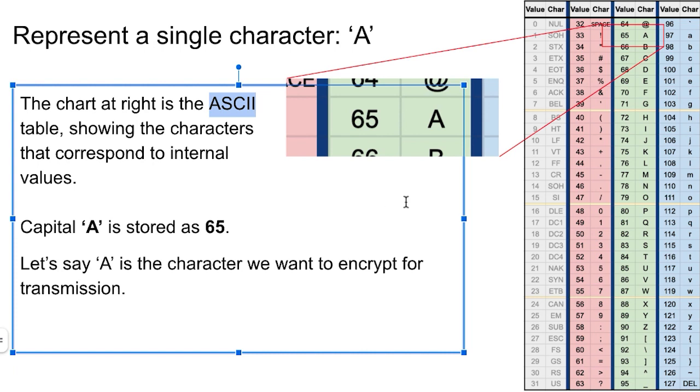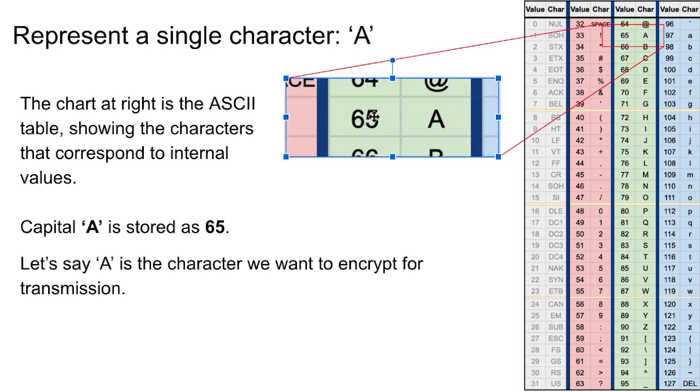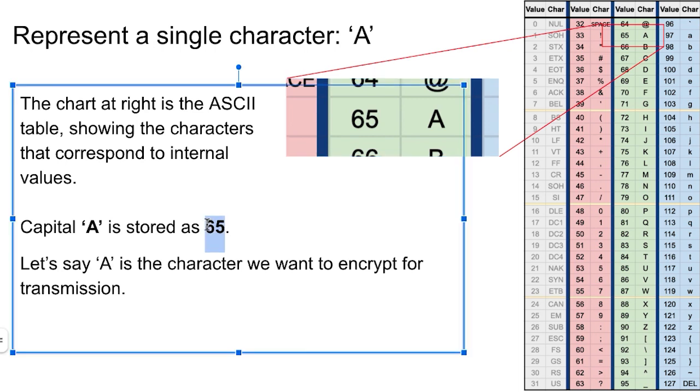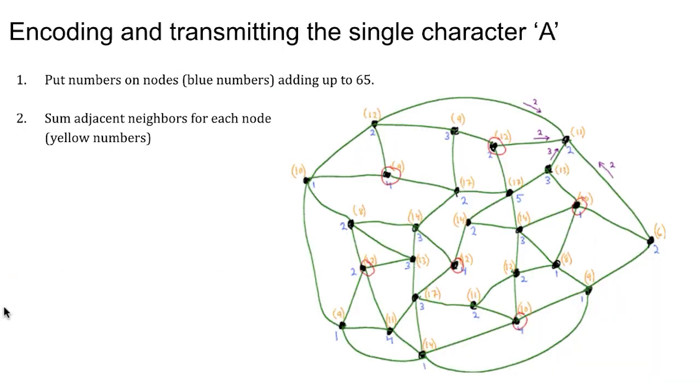So if we look at this big chart, capital A corresponds to the value 65. So 65, if we can send 65 and both sides know that we're using ASCII to represent characters and we get 65, then that would be capital A. So 65 is what we want to transmit. So we take 65 and we're going to sort of sprinkle values around the graph to send the 65.